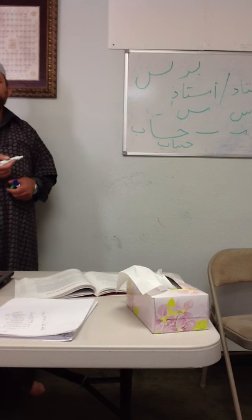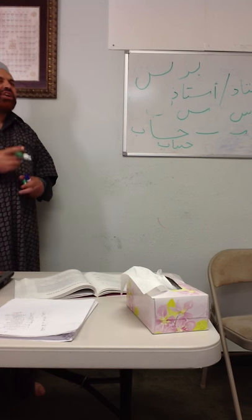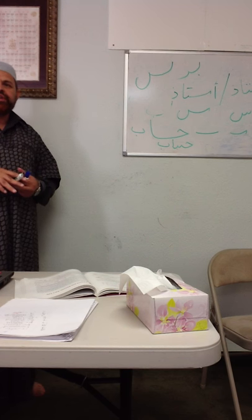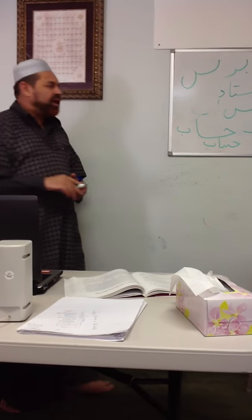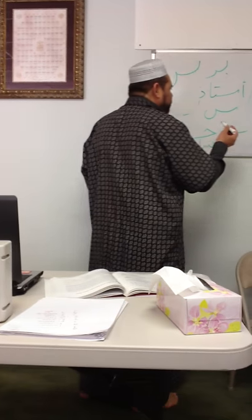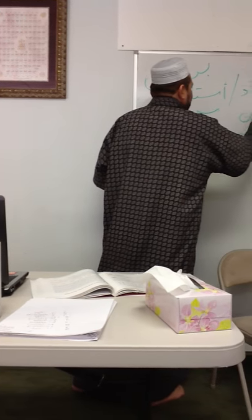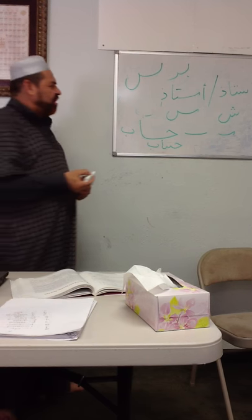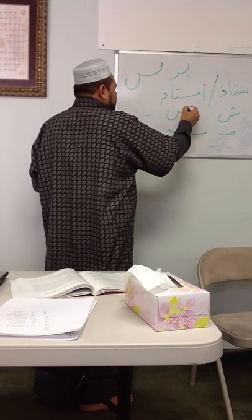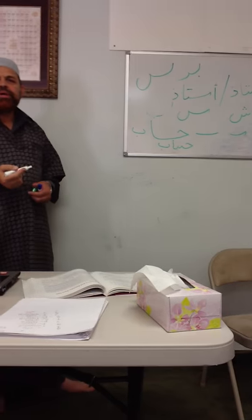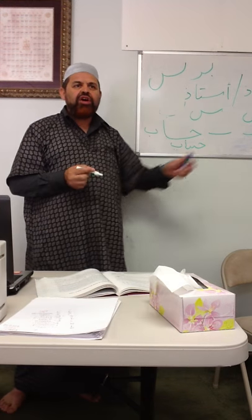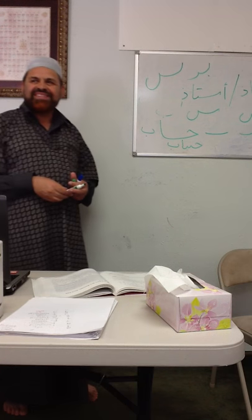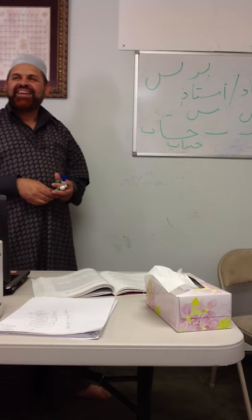The same is true for the letter sheen. Seen and sheen have the same basic structure — the only difference is the nukta. Seen has no nukta, but if you put three nukta over it, it becomes sheen. This applies to both the print version and the handwritten version.